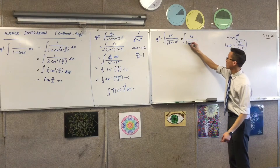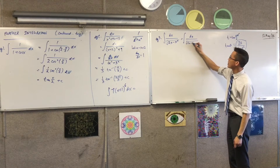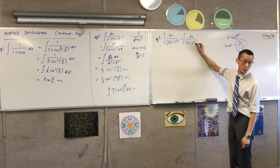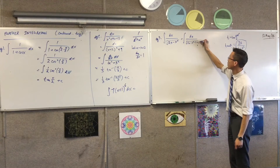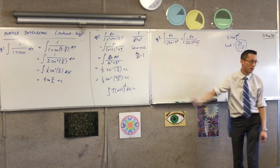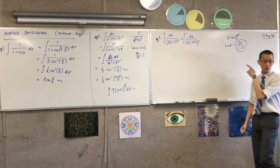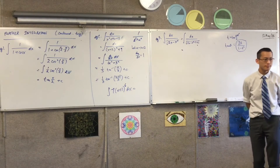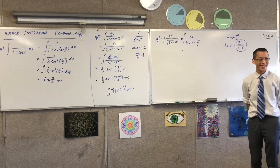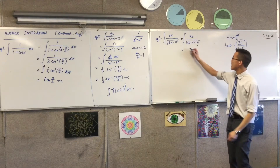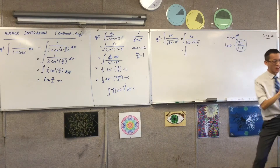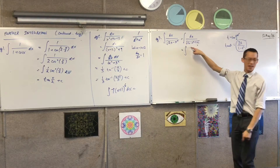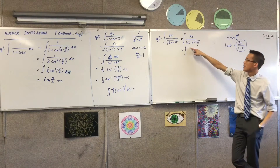I'm going to go 2x minus x squared, and do minus one and plus one. So what do I do with this? Now, first, it's not a perfect square because I've got a minus sign at the front of that x squared.